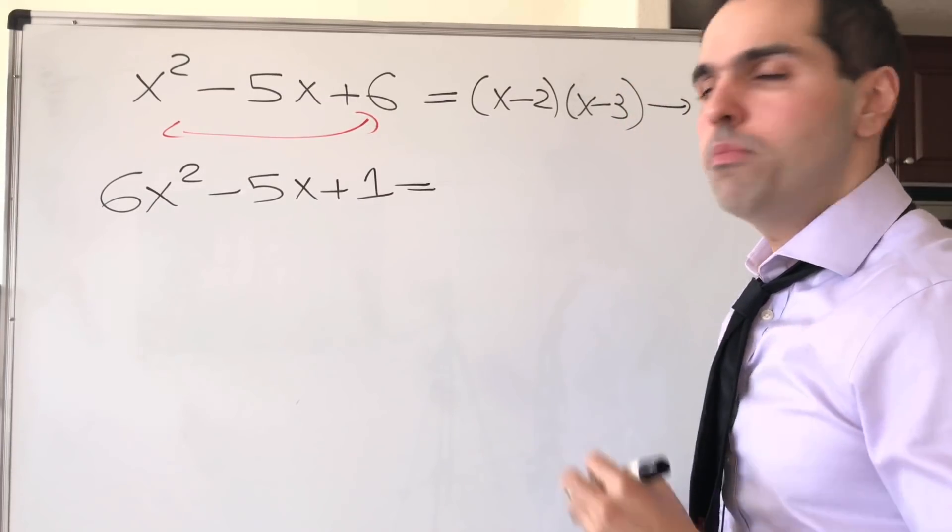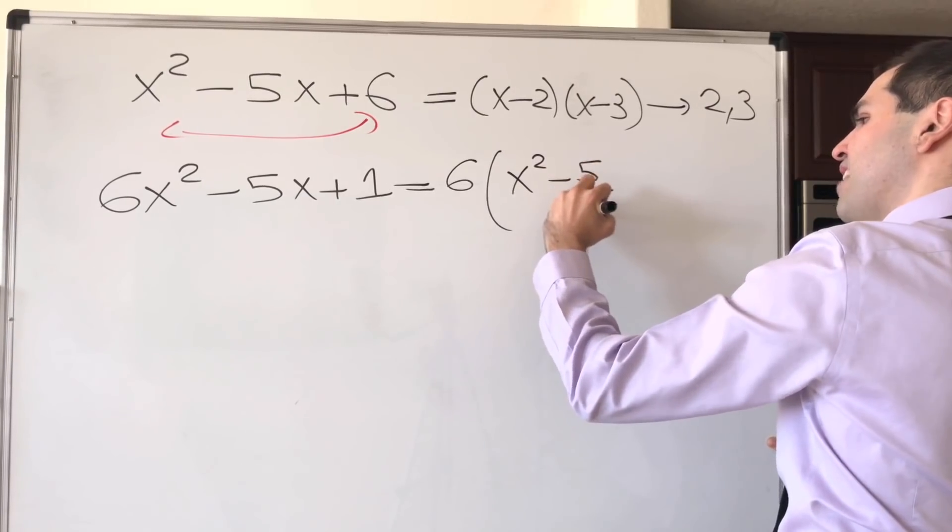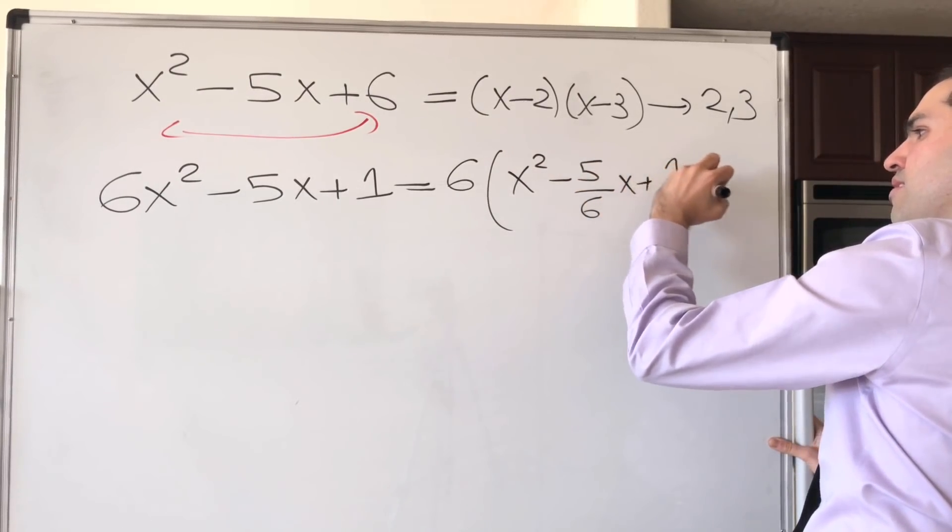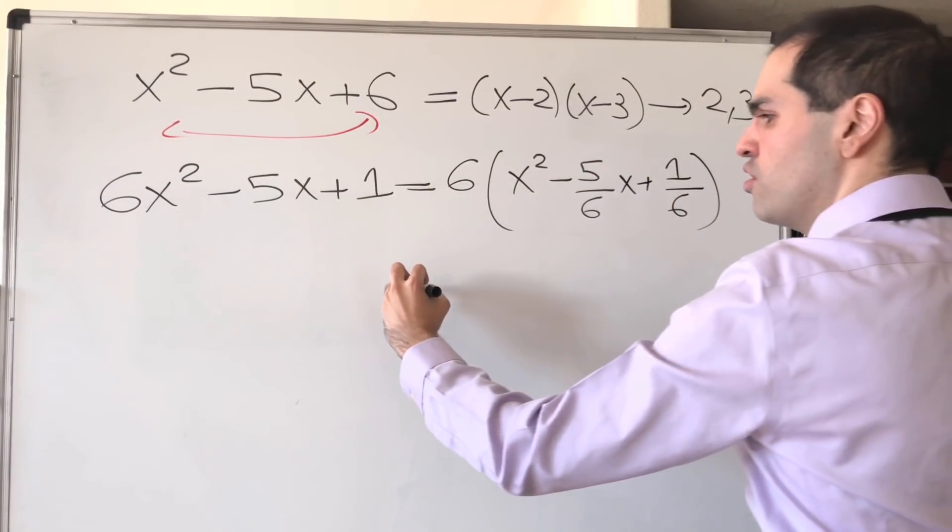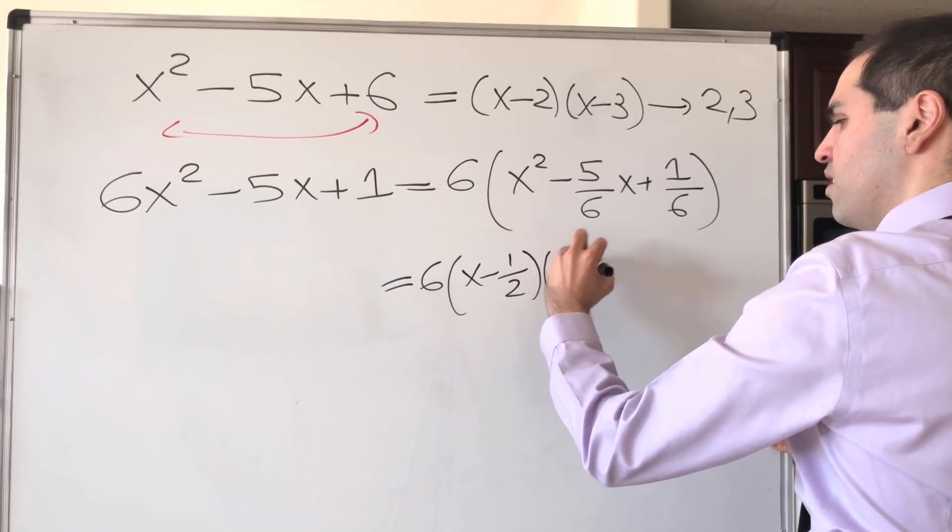Well, here you can pull the 6 out, and you get 6 times x squared minus 5/6x plus 1/6, which then you can just factor as 6 times x minus 1/2 times x minus 1/3.